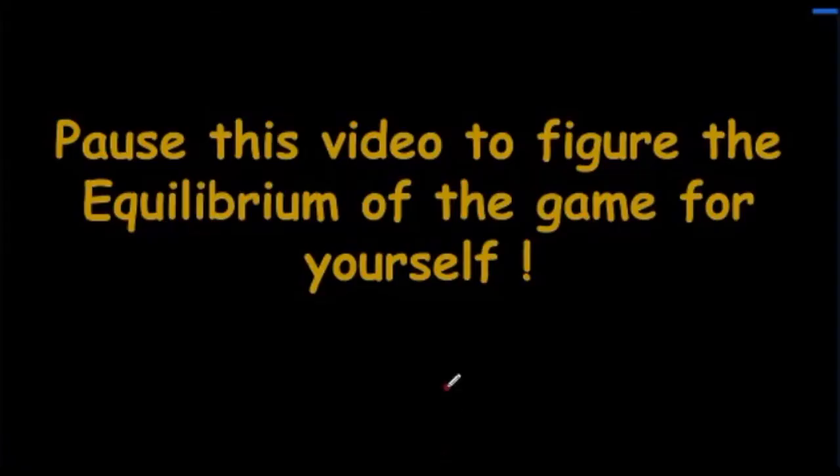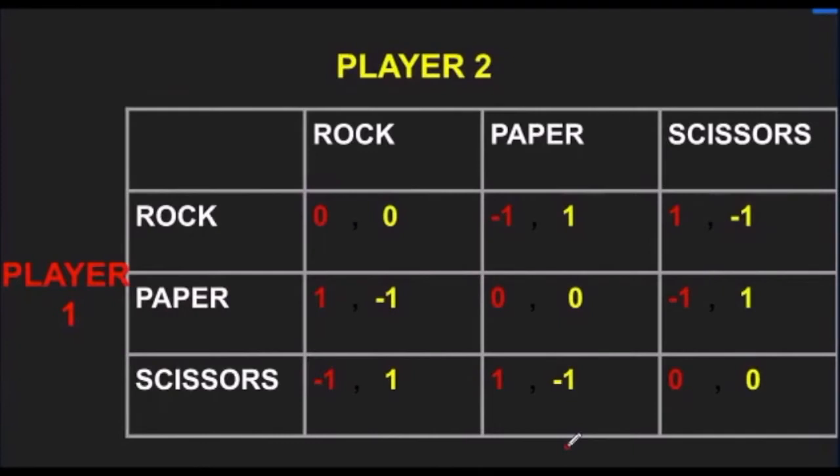You may take a minute to figure out the equilibrium of the game for yourself. First, let's position ourselves in the place of player 1 and see what he will do. If player 2 chooses Rock, then player 1 will choose Paper, because Paper wraps Rock and this is the highest payoff he can get.